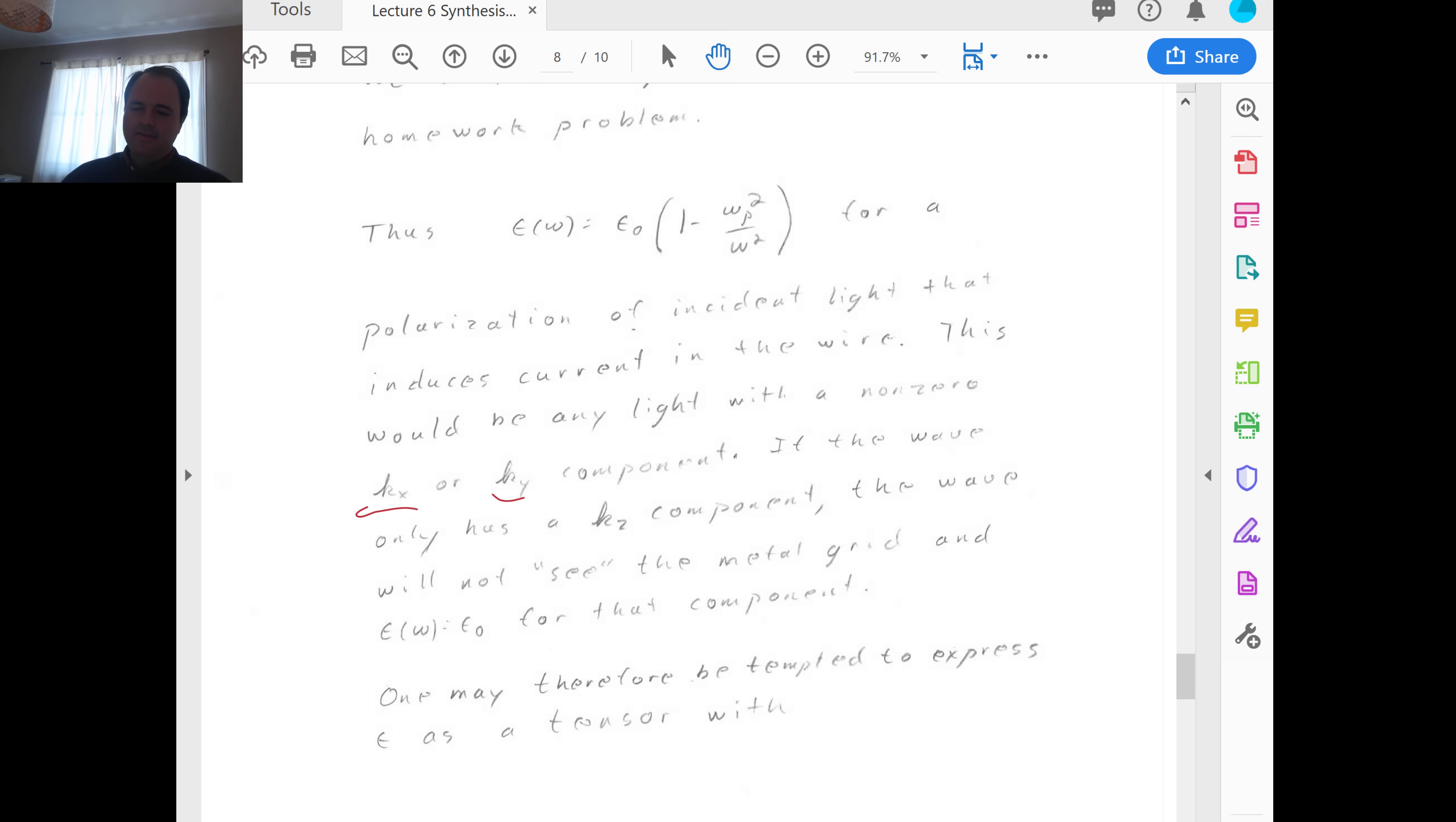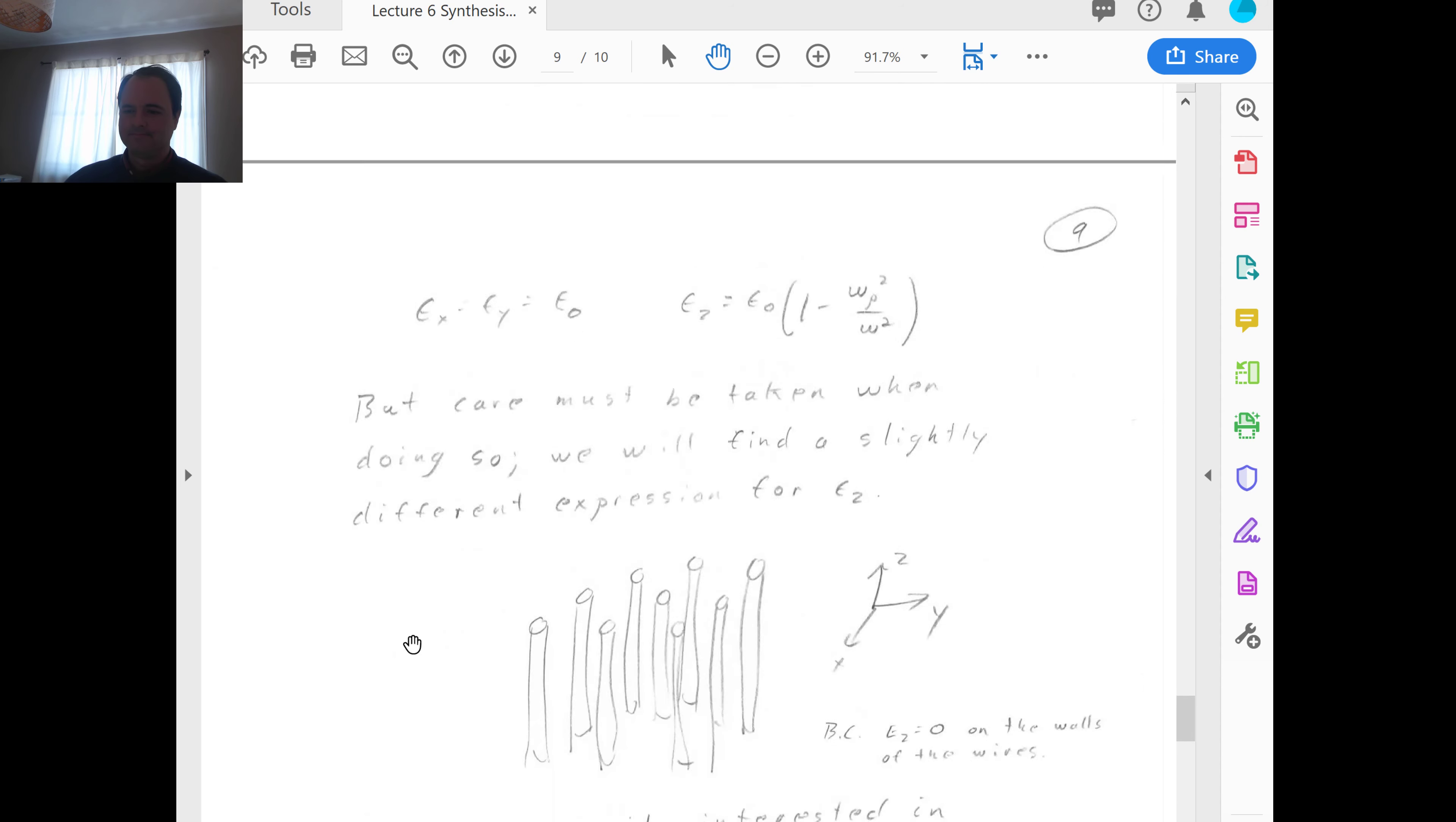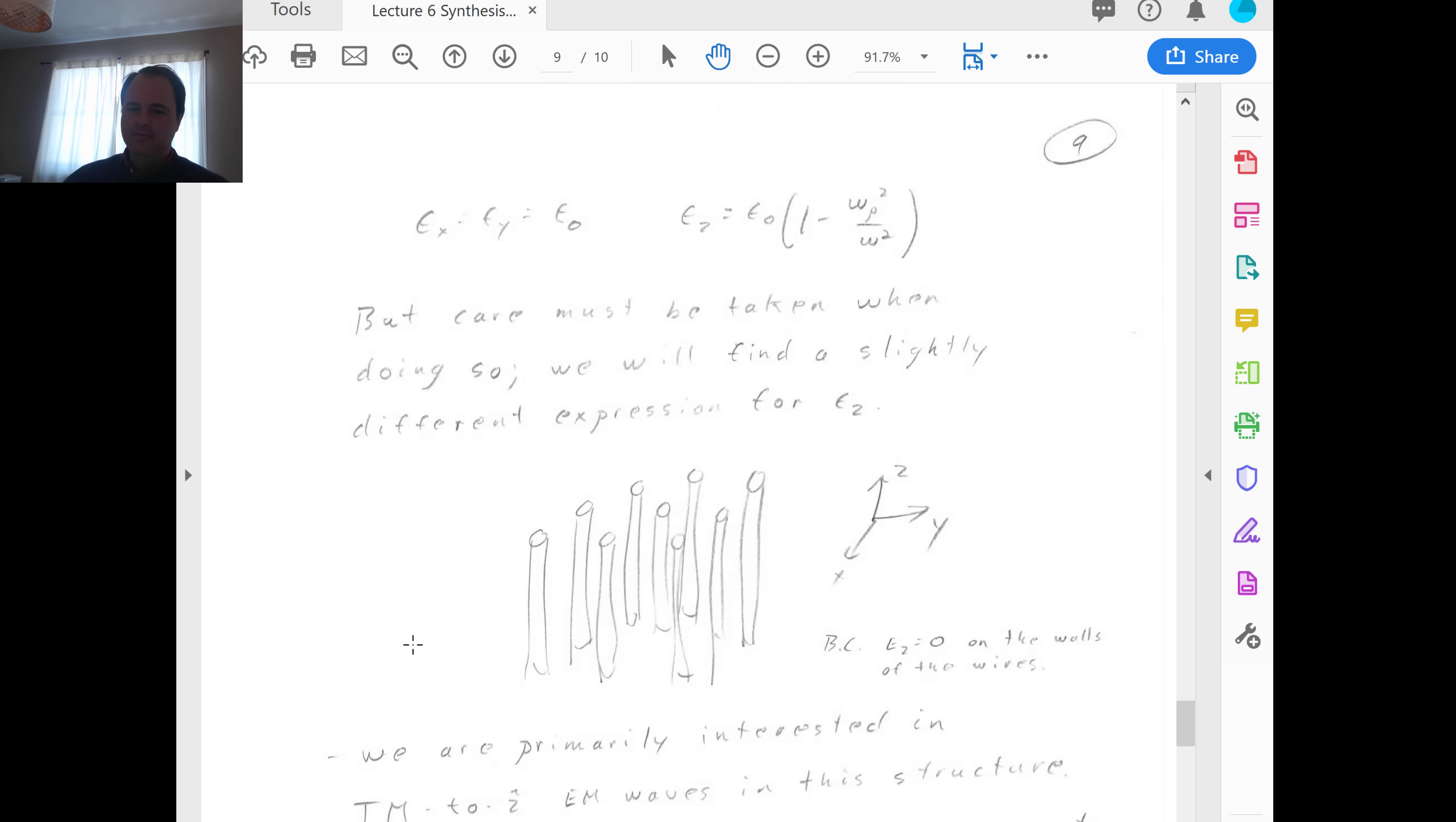Meaning light coming straight down or straight up will not have any component of the electric field parallel to the axis of the wire. And you don't get a current. So you need the incident light to have a KX or a KY non-zero component. If the wave only has a KZ component, the wave will not see, quote unquote, the metal grid. And Epsilon will, for that incident light, will have an effective Epsilon of Epsilon naught. So with that, you may be then tempted to express Epsilon as a tensor. With tensor components of EX is equal to EY is equal to Epsilon naught. And EZ is what we had derived before is Epsilon naught times a quantity 1 minus Omega P squared over Omega squared. But care must be taken when doing this because this isn't right as it turns out. But it's almost right.